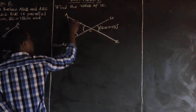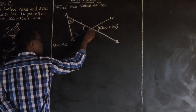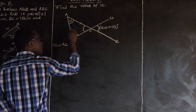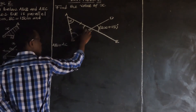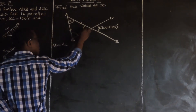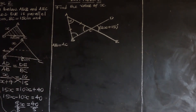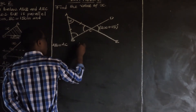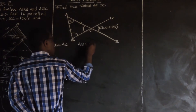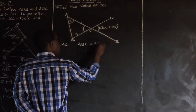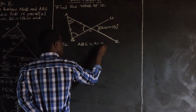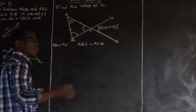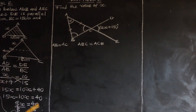Since this is our isosceles triangle, which is triangle ABC, AB and AC are equal. Angle ABC is equal to angle ACB because these are the base angles of an isosceles triangle.